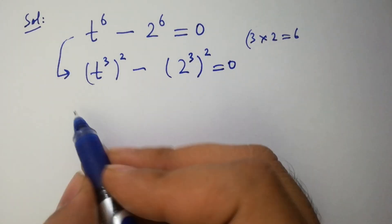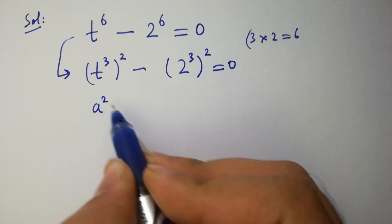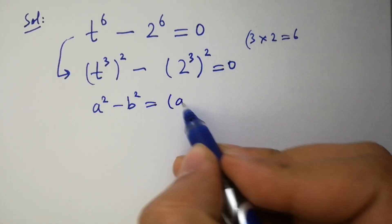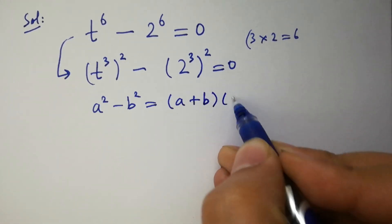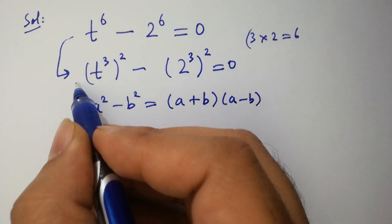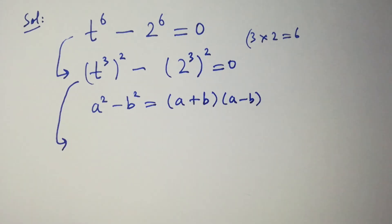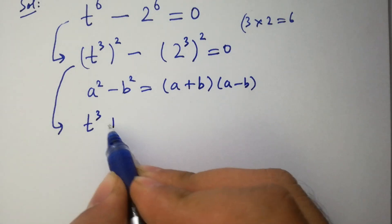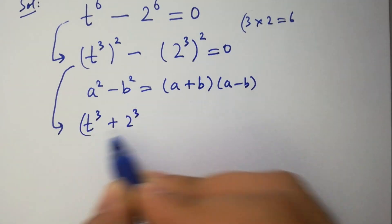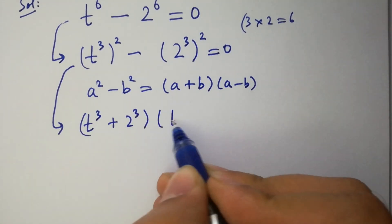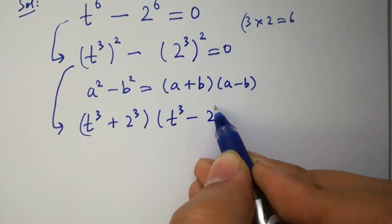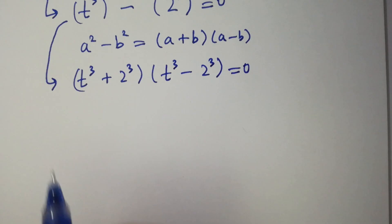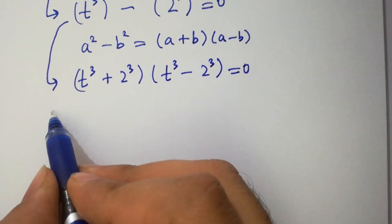As we know, a squared minus b squared equals a plus b, times a minus b. Then we have t cubed plus 2 cubed, times t cubed minus 2 cubed, equal to 0. We have two cases here. Case 1: